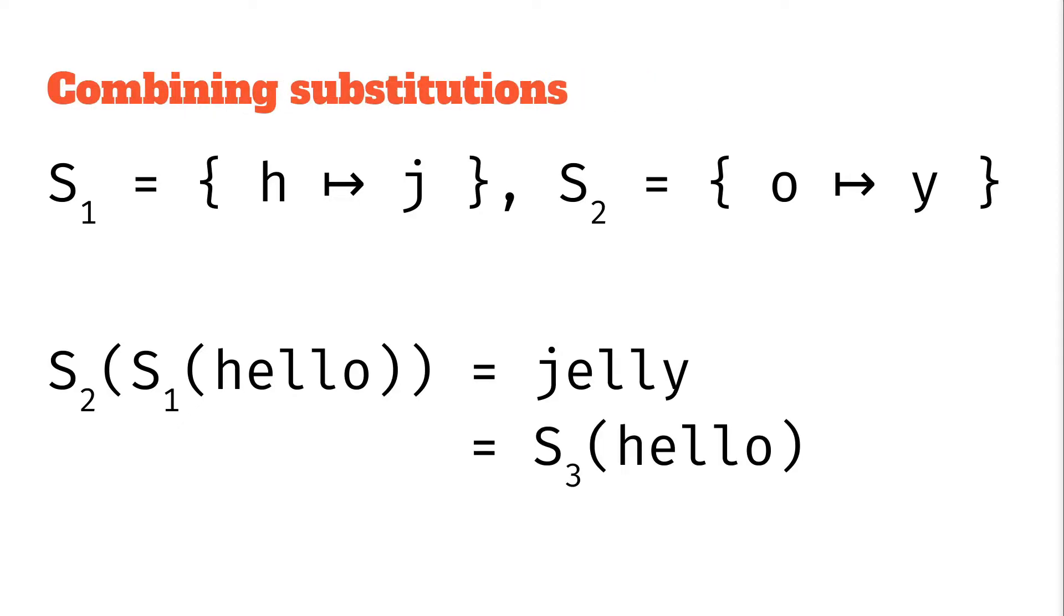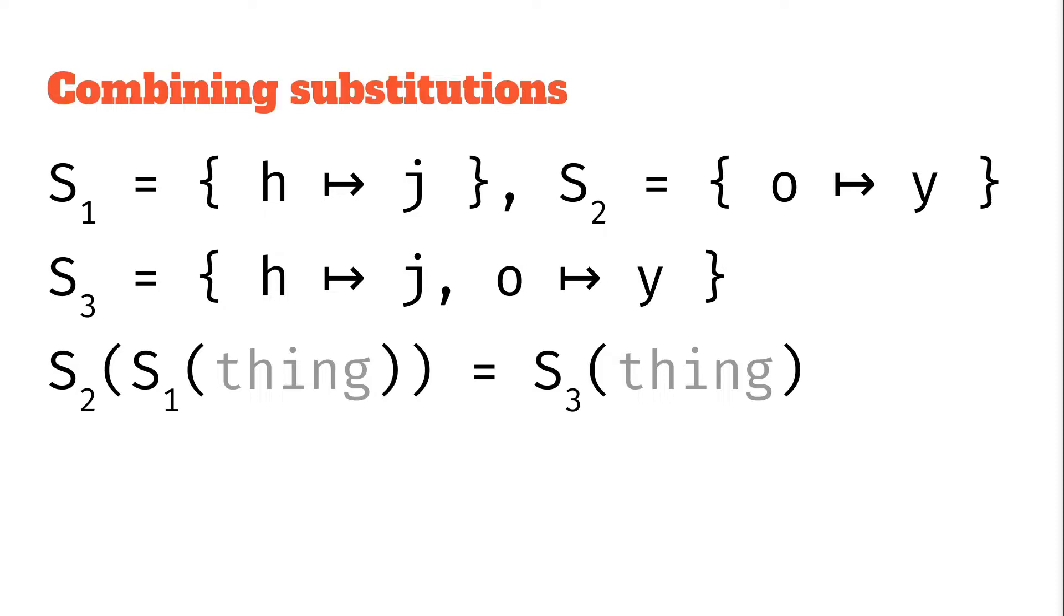Maybe we want to combine these substitutions rather than have s1 and s2 floating around. Can we compose these in a way so that we can say there must be some substitution that does the same thing. In this case what turns hello into jelly? The h needs to turn into a j the o needs to turn into a y. And so this s3 can just be h to j, o to y. In this case it's actually just the union of the two substitutions. This is not always the case and we'll see some more complicated examples. But in this case for any string this substitution s3 is the same as first applying s1 and then s2.